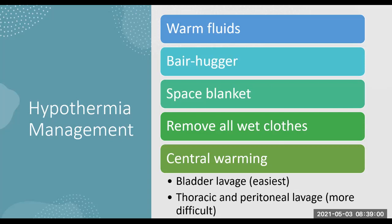If the patient has profound hypothermia, we need to do central warming. The easiest method is bladder lavage: insert a normal Foley's catheter, take warmed fluid - not hot fluid, you don't want to cause a thermal injury - and pass about 200 to 300 mils at a time into the bladder. Leave it there for a minute, then remove it. Keep repeating this process. This allows you to warm the core because the bladder is situated quite close to the core, though it's still a bit isolated from the absolute core.